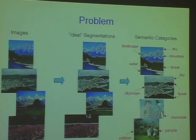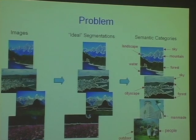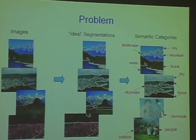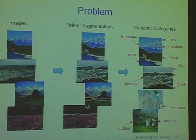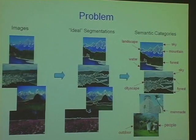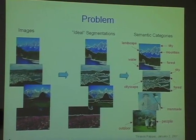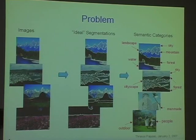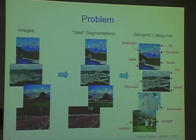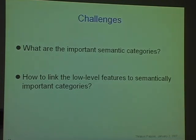We have images — these don't have to be high resolution; those were thumbnails that were compressed. We want any content to be able to deal with that. What you see in the middle is hand segmentations, but I'll show how the automatic segmentations work. If you have reasonably good segmentations and can reliably assign labels to some of the segments — for example, if you have a forest, sky, and water, you can be fairly confident this is a landscape. Similarly for cityscape — if you can identify people, you can classify the images. The challenges are: what are the important semantic categories people use for classification, and how to link low-level features to these categories?